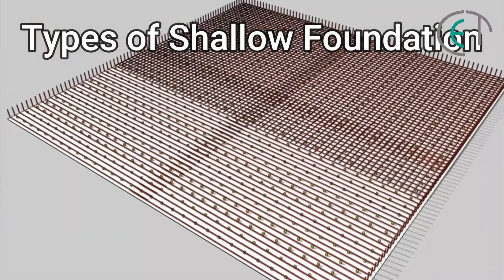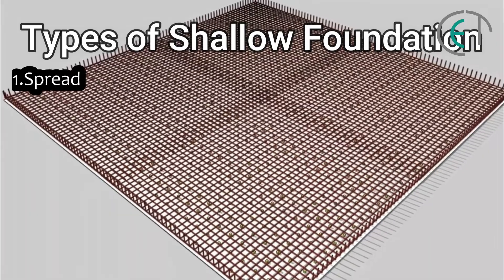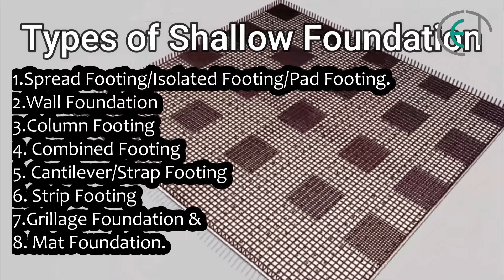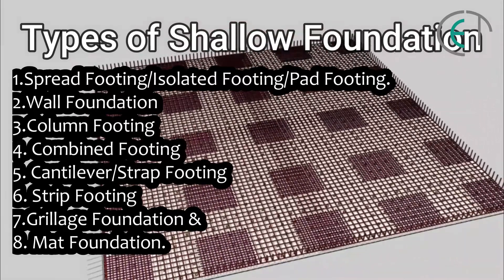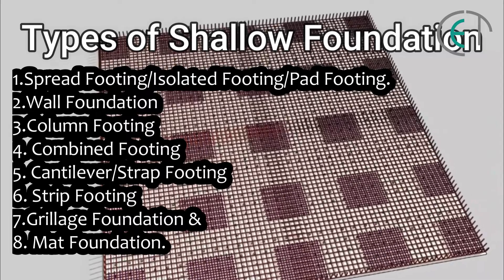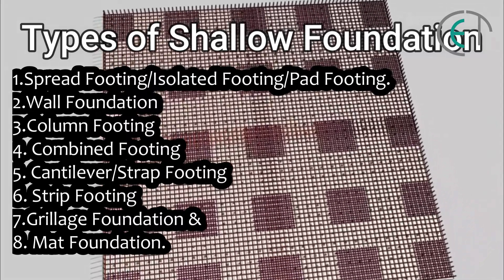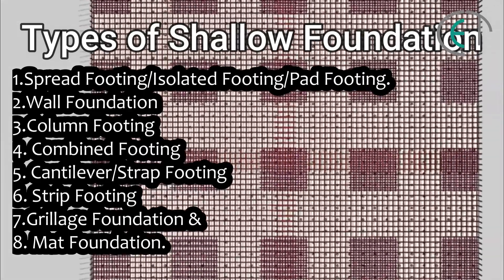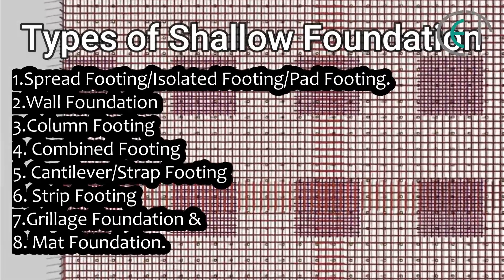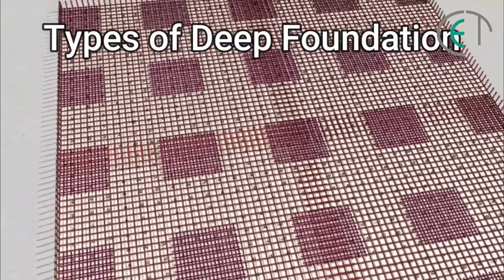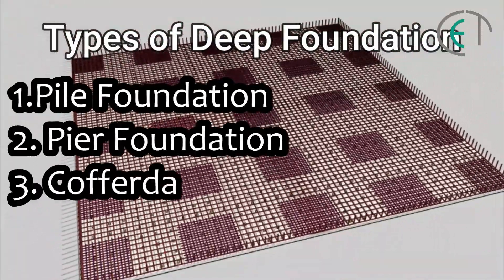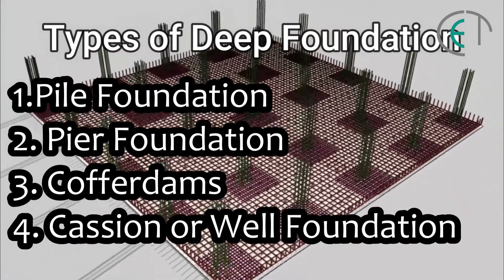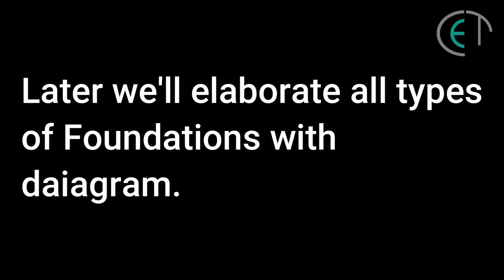The types of shallow foundation include: spread footing (also called isolated footing or pad footing), wall foundation, column footing, combined footing, cantilever or strap footing, strip footing, grillage foundation, and mat foundation — also called raft foundation. The deep foundation types include: pile foundation, pier foundation, cofferdams, and caisson or well foundation.